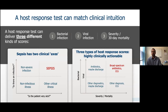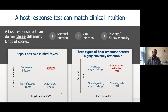As a result, the host response test can possibly match clinical intuition. Host response tests can deliver three different kinds of scores: is there a bacterial infection present, is there a viral infection present, and a third separate score — what's the severity risk, what's the 30-day mortality risk in this patient? Just like sepsis has two clinical axes — is there an infection on the y-axis and is the patient very sick on the x-axis — so can host response scores answer these questions. If the host response told you there's a bacterial infection but a non-severe one, perhaps it's antibiotics and then maybe discharge. Whereas if bacterial infection plus a high risk of mortality, that's a patient who deserves immediate broad-spectrum antibiotics and a trip to the ICU.